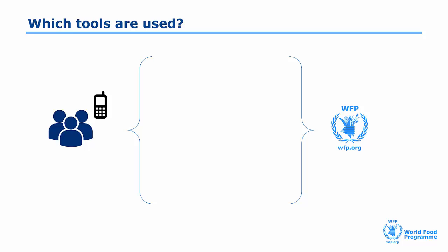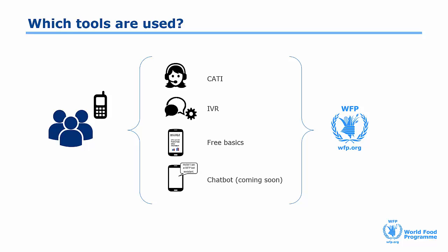The tools we use for two-way communication are CATI — Computer Assisted Telephone Interviewing — IVR — Interactive Voice Response — Free Basics, which is being piloted in Malawi, and a chatbot that is currently being developed and will be tested in IT.